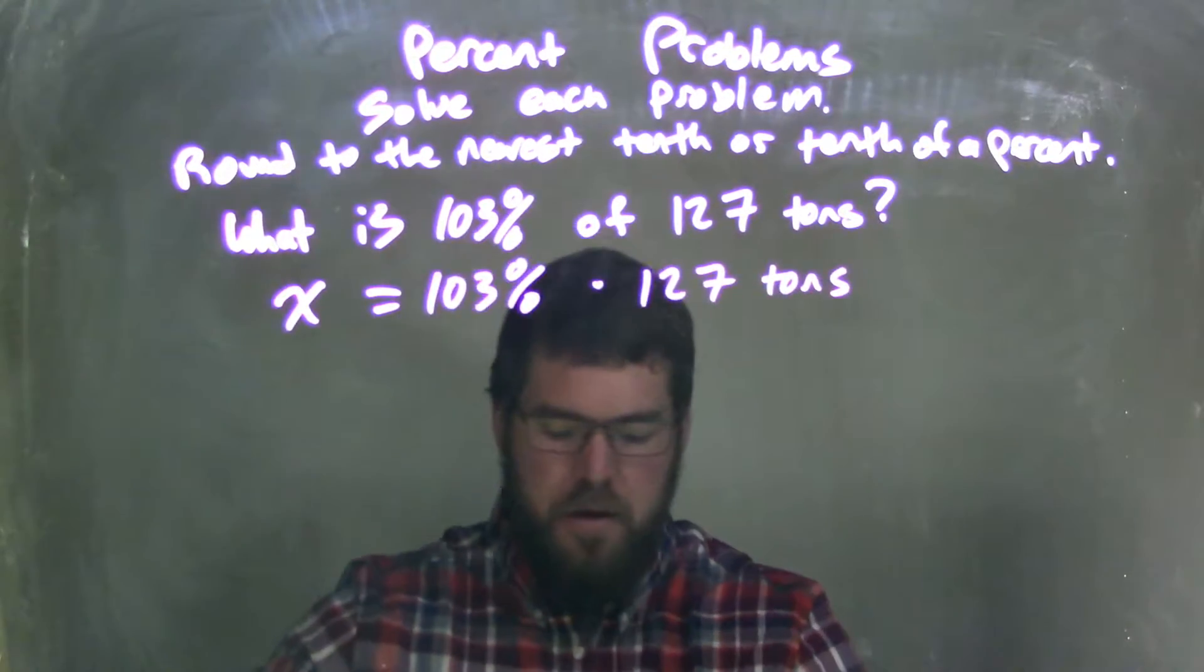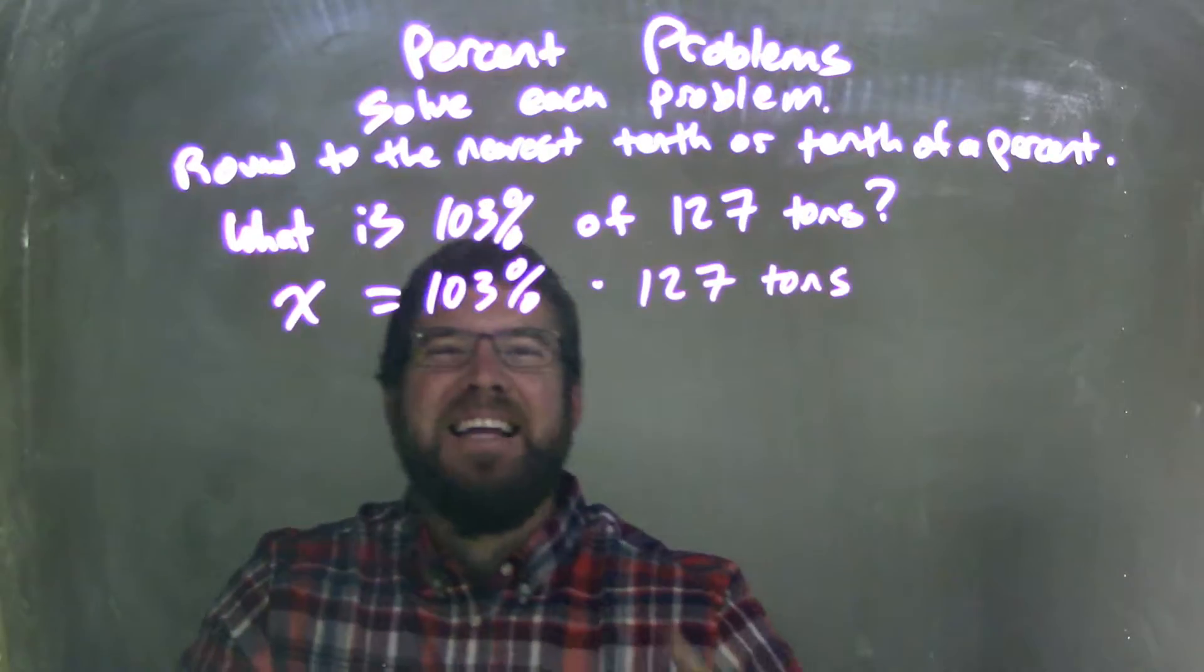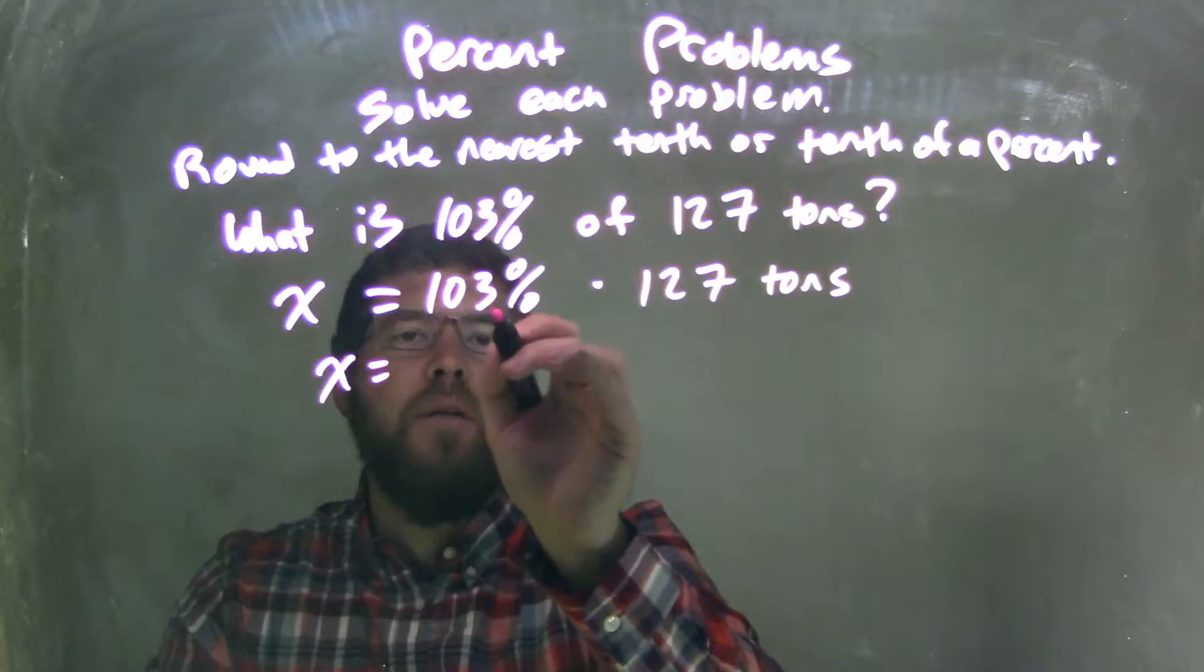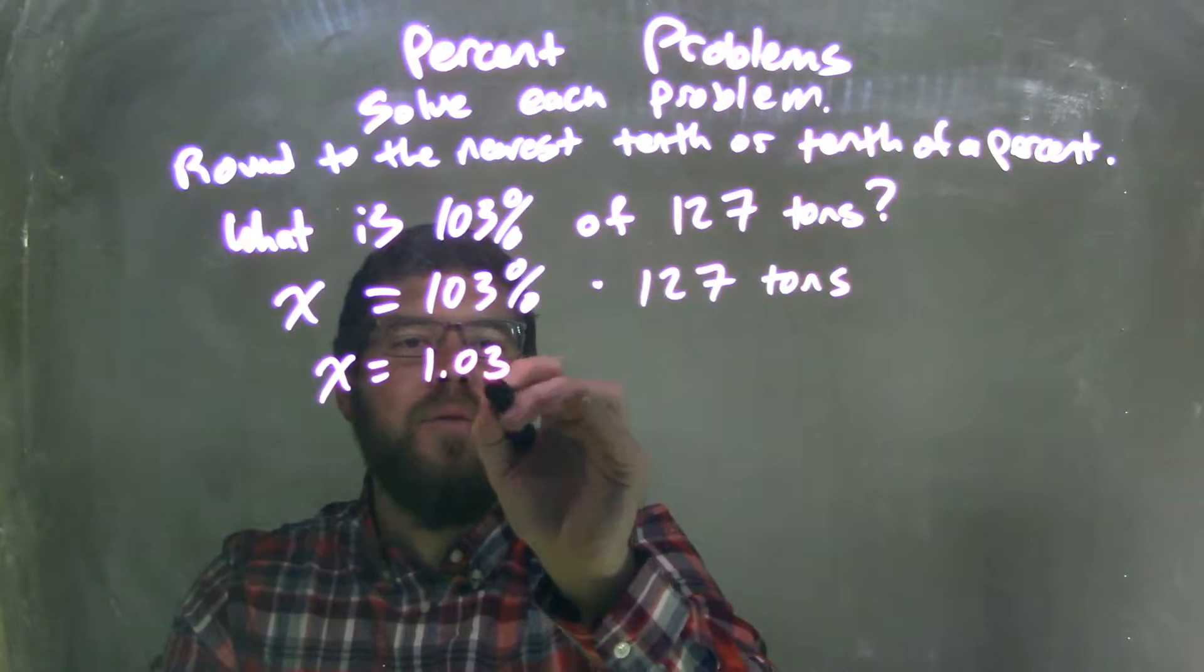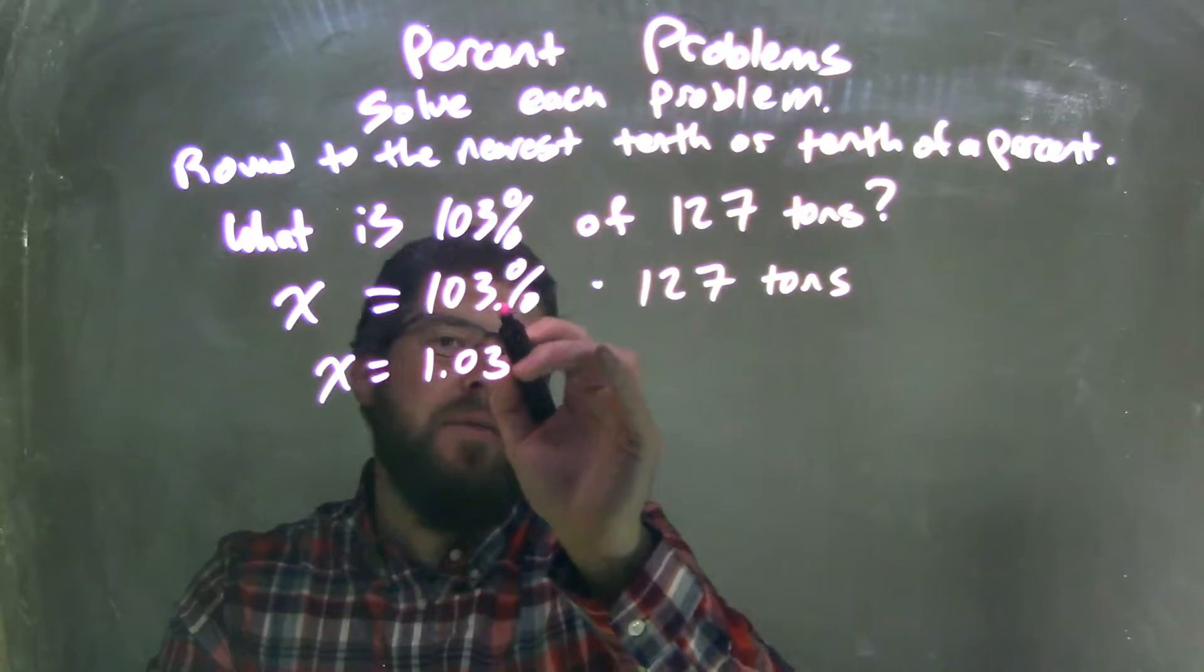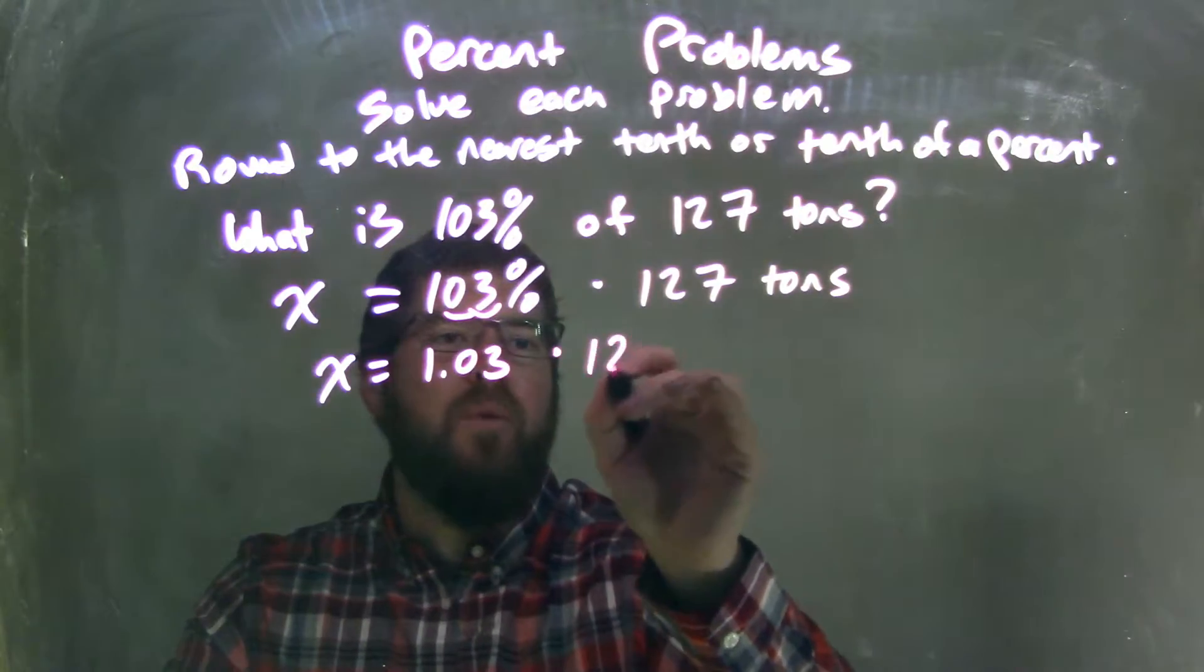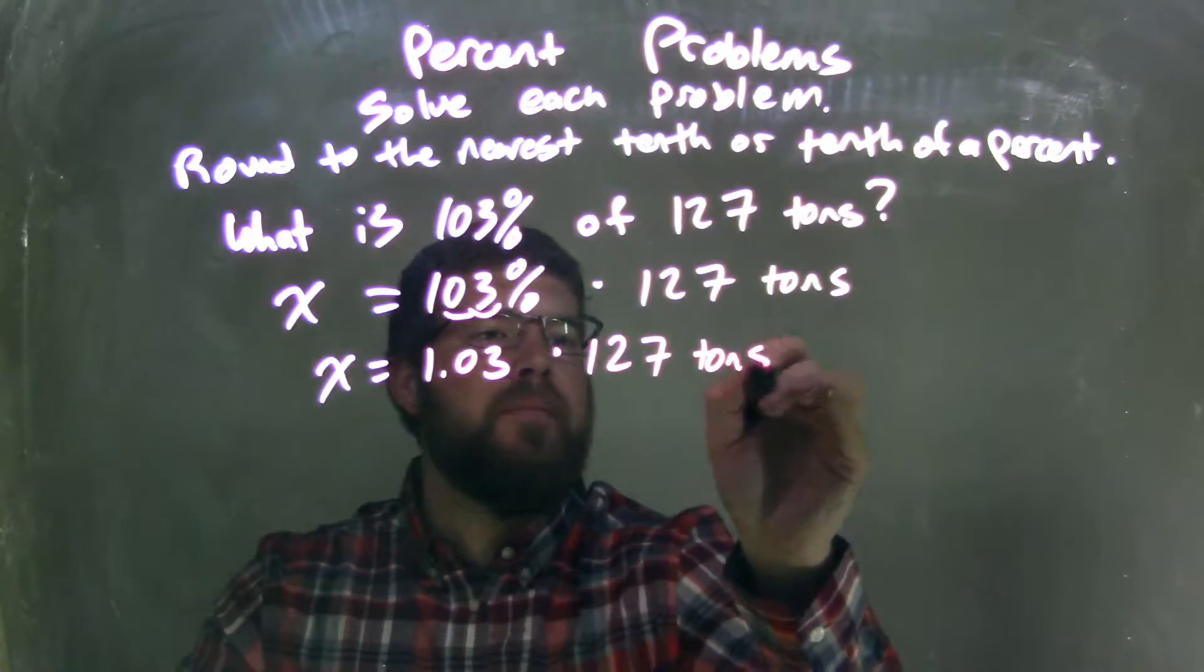I need to convert that 103% to a decimal. So I keep the x down here. 103% is 1.03 as a decimal. If there's a decimal point there, we move two units to the left, multiplied by 127 tons.